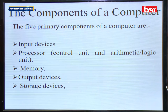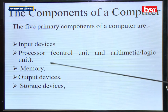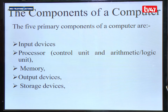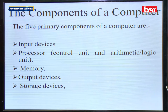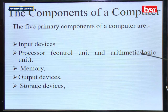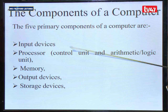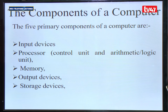We have a processor. The processor, also known by its acronym, is the central processing unit — CPU. These names can be used interchangeably. In the CPU, we have the control unit and the arithmetic logic unit. The control unit coordinates the hardware of the computer, and the arithmetic logic unit does the arithmetic or calculations of any instruction in a computer.